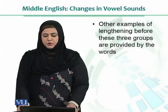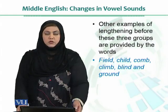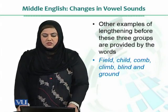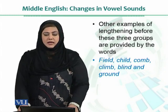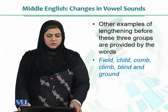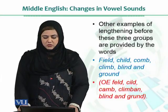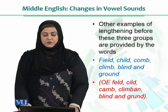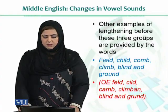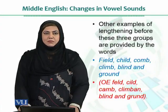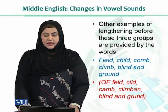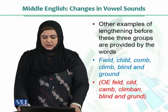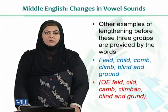Other examples of the lengthening before these three groups are provided by the words shown on screen — all given here in Modern English. Please compare these with the Old English pronunciations of these vowel sounds. Instead of Modern English 'field,' it was 'felled.' Instead of 'child,' it was 'chilled.' Instead of 'comb,' it was 'camb.' Instead of 'climb,' it was 'clemben.' So the vowel sound was shorter. In the same way, 'blind' was 'blind,' not with a long I sound. And 'ground' was 'grand,' not with the long ound sound.